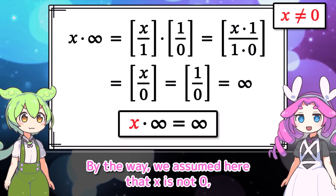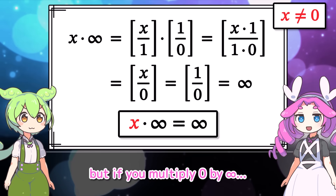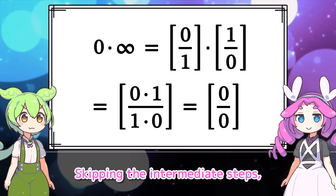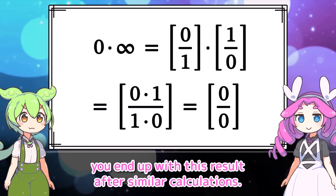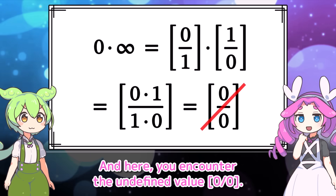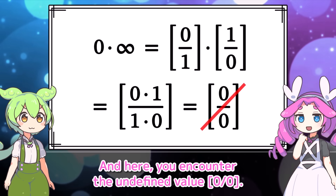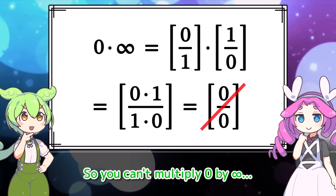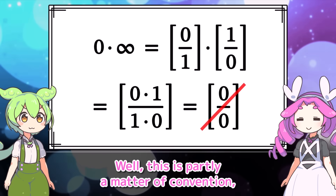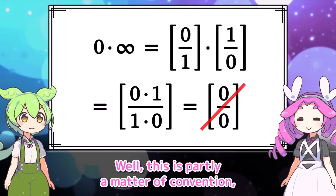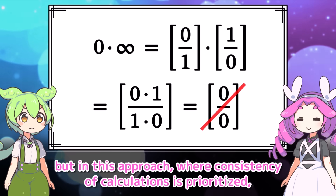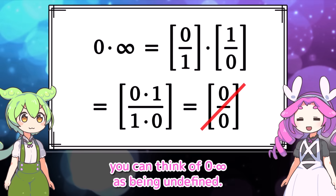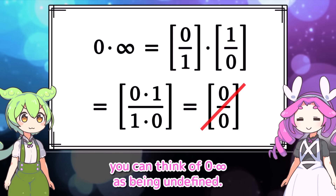By the way, we assumed here that x is not 0. If you multiply 0 by infinity, skipping the intermediate steps, you end up encountering the undefined value 0 over 0 after similar calculations. This means the calculation itself is invalid — so you can't multiply 0 by infinity. In this approach where consistency of calculations is prioritized, 0 times infinity is undefined.